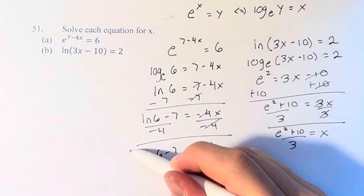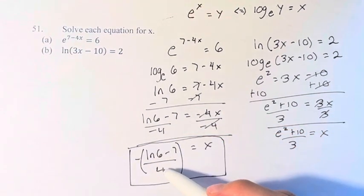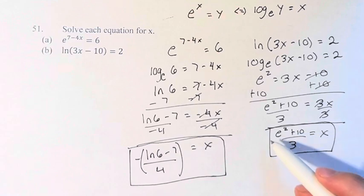So the solution to a is negative ln of 6 minus 7 over 4, and the solution for b is e squared plus 10 over 3.